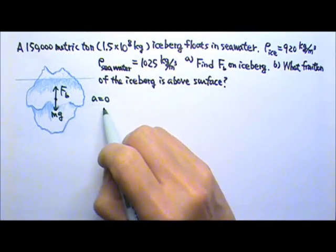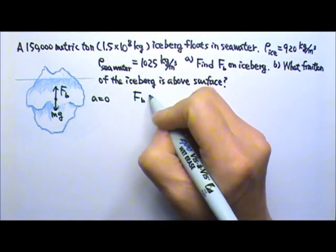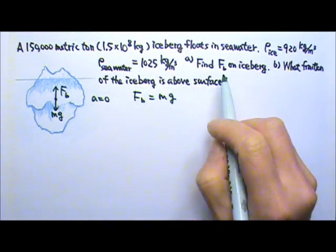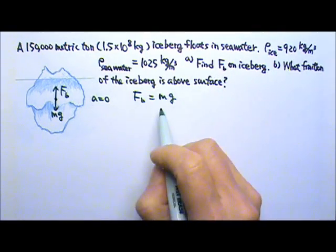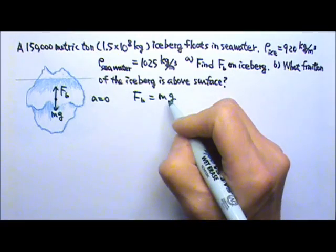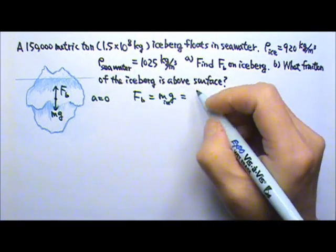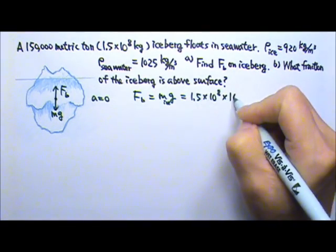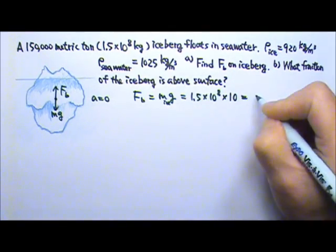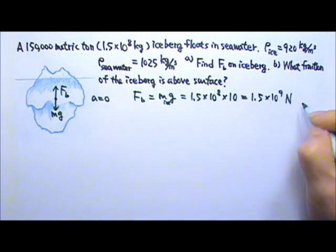Since the acceleration is zero, the upward force and the downward force are equal. So to find the buoyant force acting on the iceberg, all we have to do is find the mg of the iceberg. The mass is 1.5 × 10^8 times g, using 10 for g, so we get 1.5 × 10^9 newtons. That's the answer for part A.